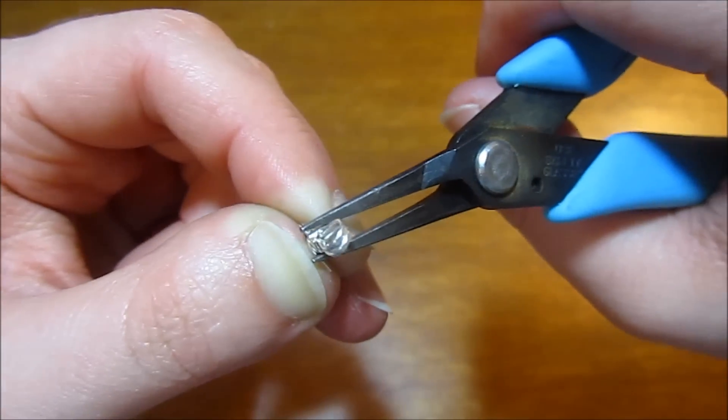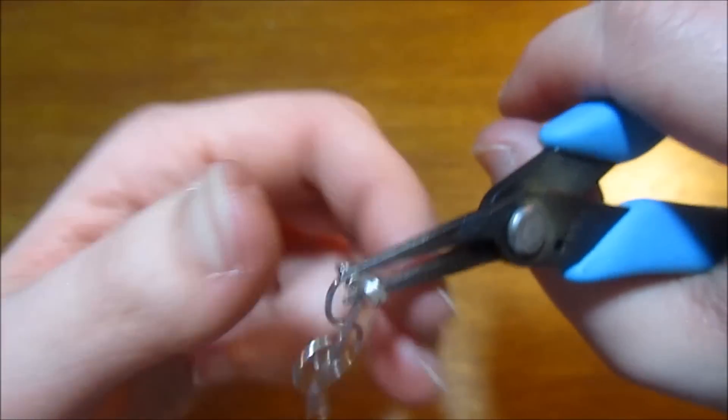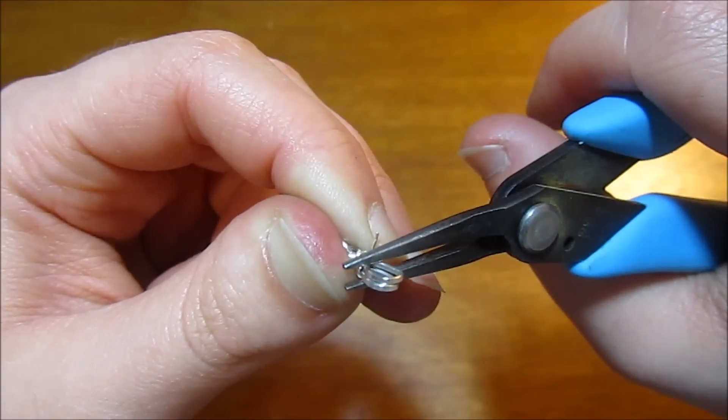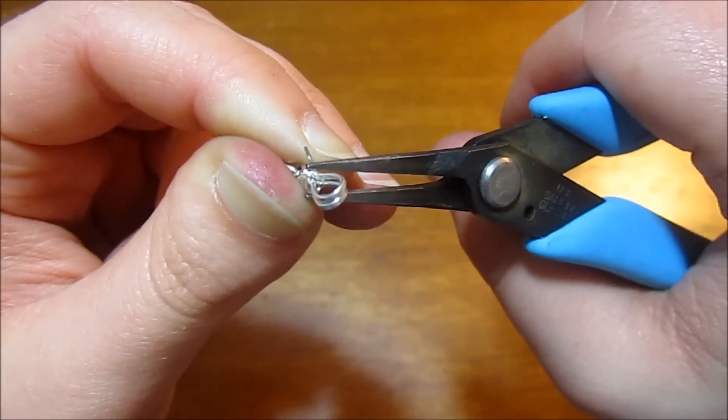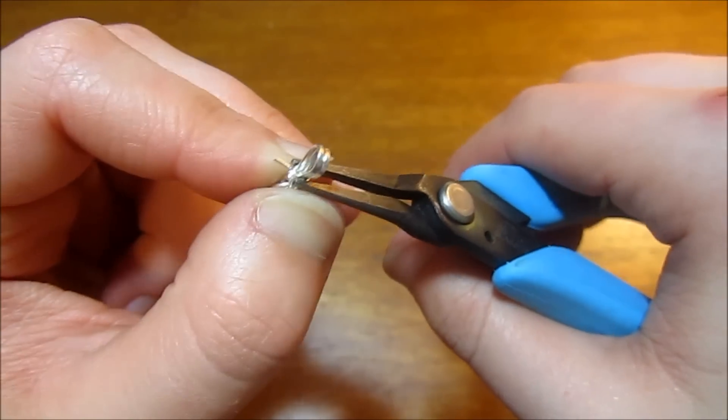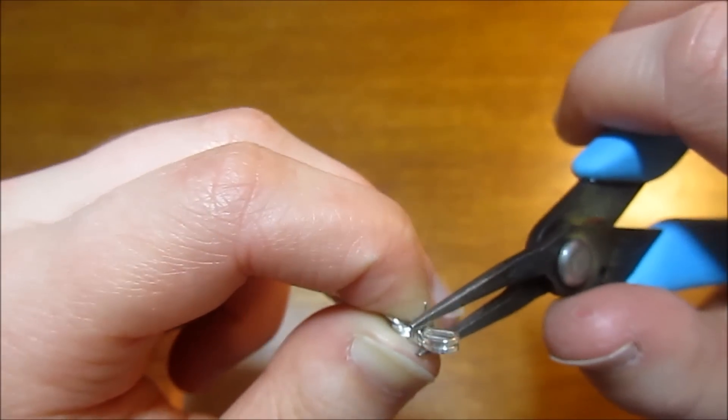When you get to the end here with your little tail, you can just push it nice and flush and kind of bend it in so that it's not sticking out and it's really not that visible.